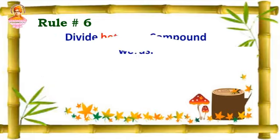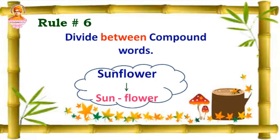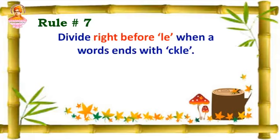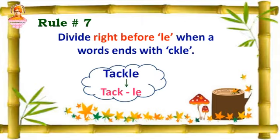Rule number six: divide between compound words. Example: sunflower is a compound word, so we separate the two parts as sun-flower. Rule number seven: divide right before le when the word ends with c-k-l-e. If a word ends with c-k-l-e, we split right before le. Like tackle — it ends with c-k-l-e, so we split it as tac-kle.